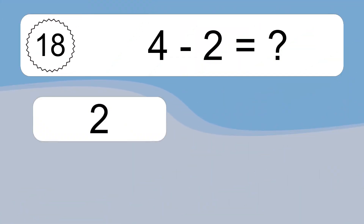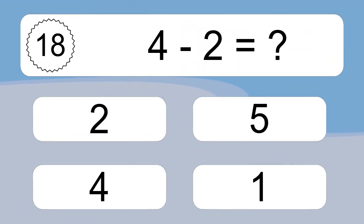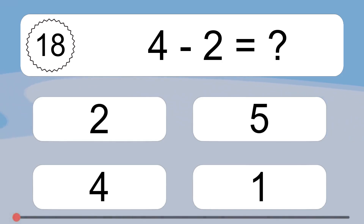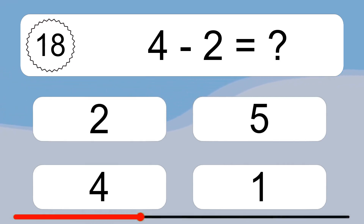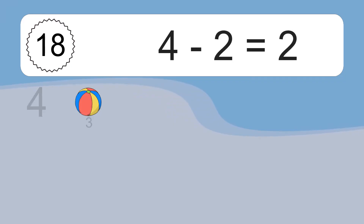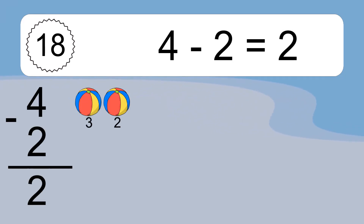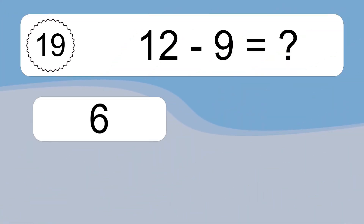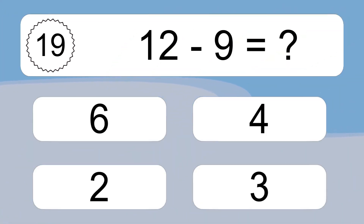4 minus 2 equals what? 4 minus 2 equals 2. Let's count it: 3, 2.